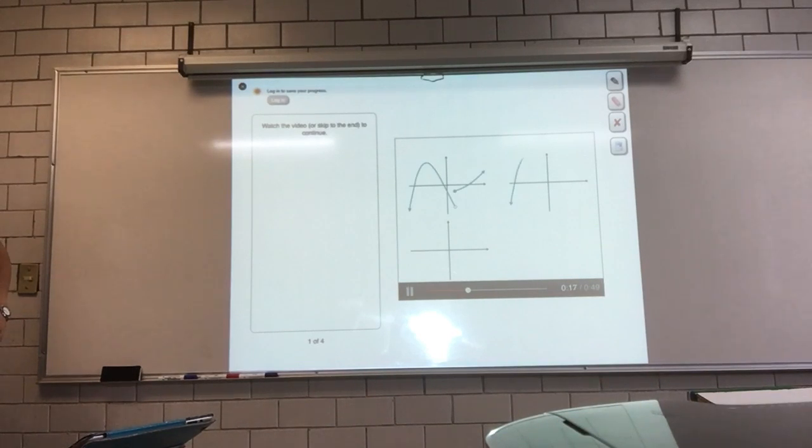Remember that a function is continuous if you can draw its graph without lifting up your pen. Here are three functions that are not continuous at the point x equals a. In graph C, these arrows indicate that there's a vertical asymptote at x equals a, meaning the function goes to positive infinity on this side and negative infinity over here. There are a few different types of discontinuities. For one of these types, a function approaches the same value on the left and right sides of the discontinuity. In other words, the left and right limits are the same. Which of these functions satisfies this expression?